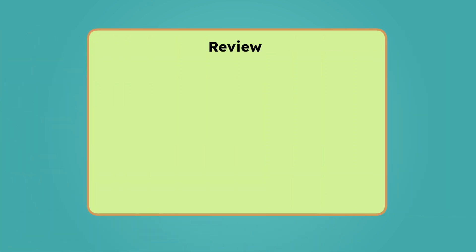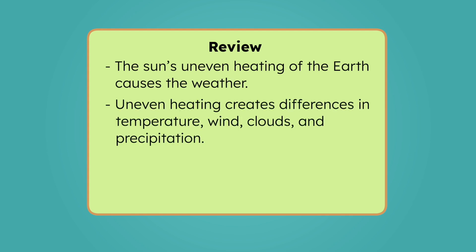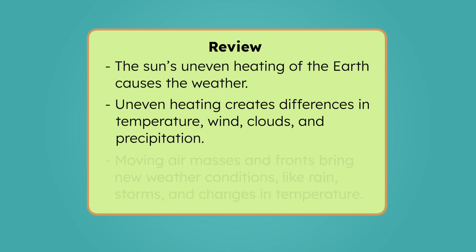Let's review everything we've learned today. The sun's uneven heating of the earth causes the weather. Uneven heating creates differences in temperature, wind, clouds, and precipitation. Moving air masses and fronts bring new weather conditions, like rain, storms, and changes in temperature. To learn more about the causes of weather, be sure to check out the activities and practice questions that go with this lesson.